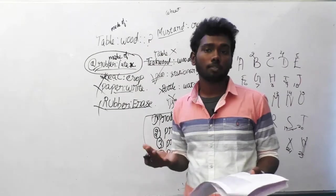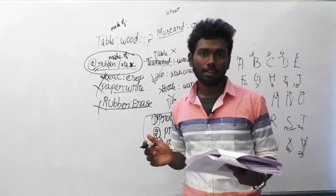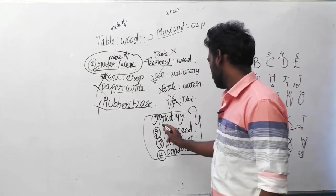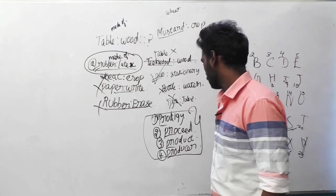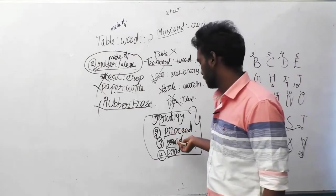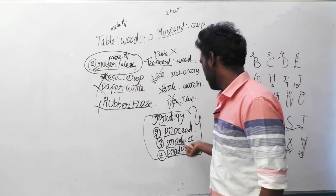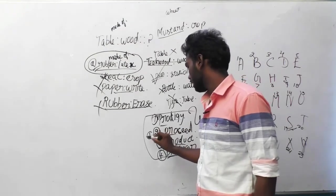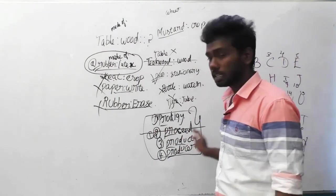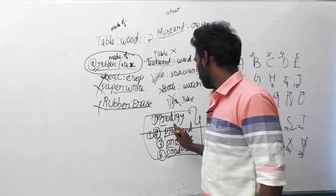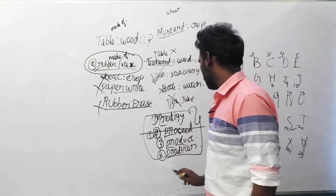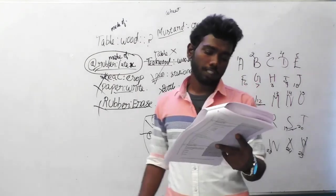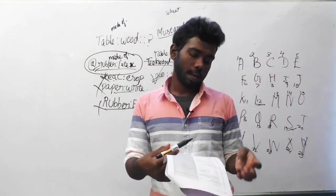This question is asked in SSC JE, 25th January 2018, forenoon session. All these words start with P-R-O. Here D comes, so this is going to be first because C comes before D. For the second position, looking at prodigy, product, and producer — I comes before U — so prodigy will be the right answer. The answer for question 134 is prodigy, option A.